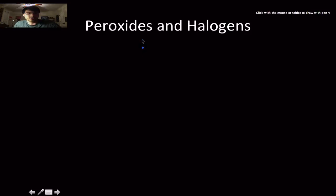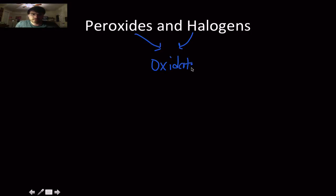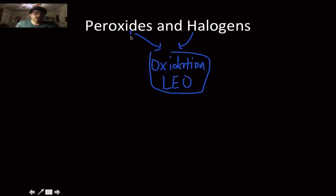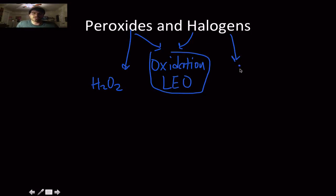Peroxides and halogens both work by causing oxidation — loss of electrons — which is very damaging and destroys things. You put hydrogen peroxide on a cut to keep it clean and prevent infection. Chlorine is the primary ingredient of bleach; you obviously don't want to put that on your skin or drink it.